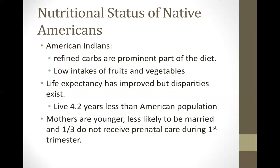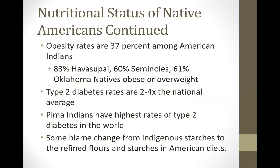Many mothers do not receive prenatal care, and many are young and unmarried. Obesity rates are very high within American Indians and are among the highest in the world. The Havasupai Indians in Arizona have 83% obesity rates, Seminoles 60%, and Oklahoma Natives 61%. Because of these high obesity rates, type 2 diabetes rates have also risen. Pima Indians have the highest rates of type 2 diabetes in the world.